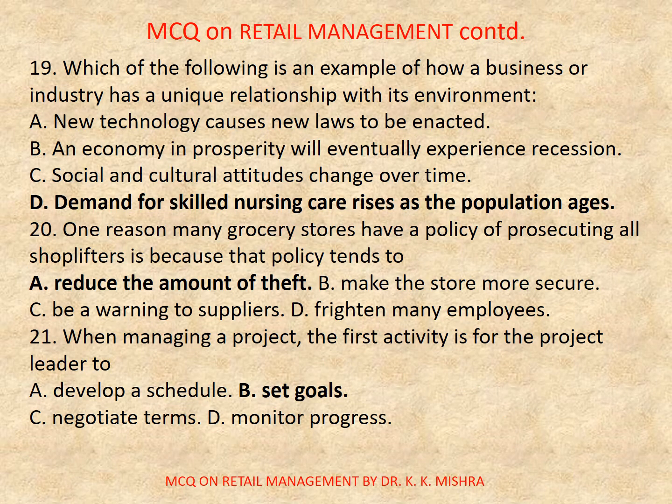Question number 19: Which of the following is an example of how a business or industry has a unique relationship with its environment? a) new technology causes new laws to be adopted, b) an economy in prosperity will eventually experience recession, c) social and cultural attitudes change over time, d) the demand for skilled nursing care rises as the population ages. Correct option is d) demand for skilled nursing care rises as the population ages.